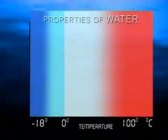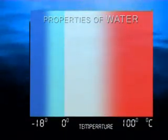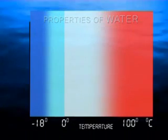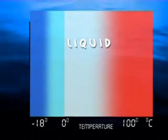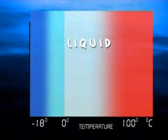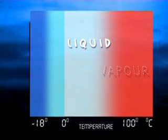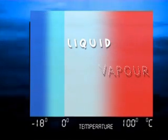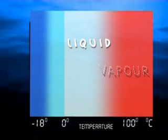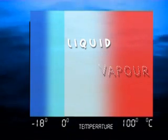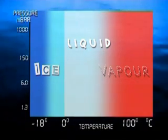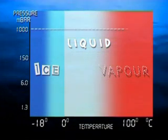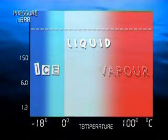We are all familiar with how water behaves as the temperature changes. Between 0 and 100 degrees Celsius it's the familiar clear liquid. Raise the temperature to 100 degrees and it turns to vapor in the form of steam. And if we lower its temperature below zero, it becomes solid as ice. This is all very familiar at normal atmospheric pressure.